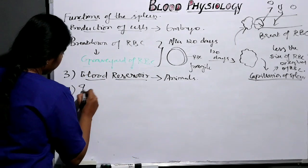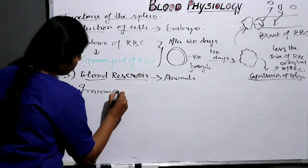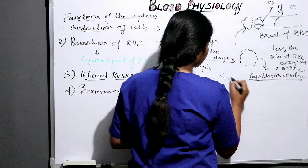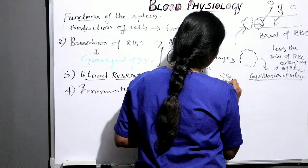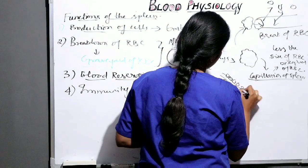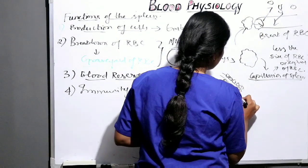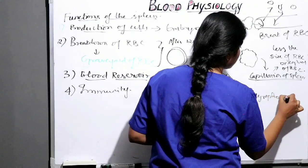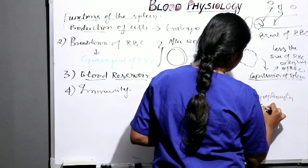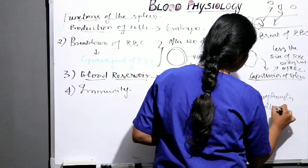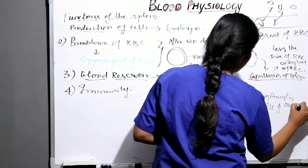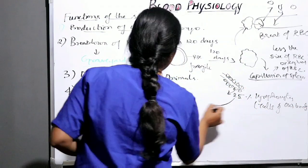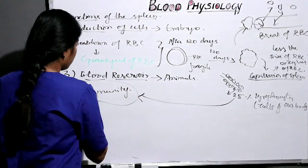The spleen also acts as a blood reservoir. It doesn't play a major role in humans, but plays a major role in animals. It also helps in the process of immunity, because the central artery consists of a sheath of lymphocytes — about 25% of the T cells of our body.